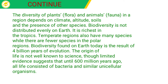The diversity of plants, called flora, and animals, called fauna, in a region depends on climate, altitude, soil, and the presence of other species. Biodiversity is not distributed evenly on earth — it is richest in the tropics, temperate regions also have many species, while there are fewer species in the polar regions. Biodiversity found on earth today is the result of 4 billion years of evolution, and until 600 million years ago, all life consisted of bacteria and similar unicellular organisms.